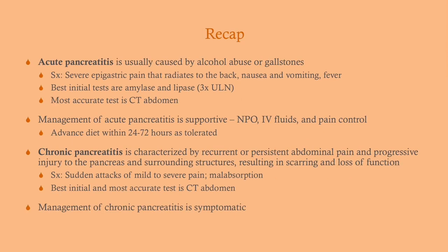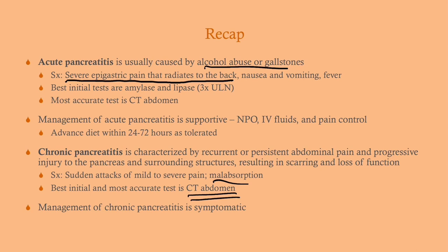To recap: acute pancreatitis is usually caused by alcohol abuse or gallstones. Symptoms include severe epigastric pain that radiates to the back, nausea, vomiting, and food avoidance. Best initial test is amylase and lipase; most accurate test is CT abdomen. Management is supportive: NPO, IV fluids, pain control, and advance diet as tolerated. Chronic pancreatitis is recurrent and persistent abdominal pain due to progressive injury, resulting in scarring and loss of function. Symptoms are attacks of mild to severe pain with malabsorption history, typically in a chronic alcoholic. Best initial and most accurate test is CT abdomen showing calcifications. Management is symptomatic, mainly pancreatic enzyme replacement.